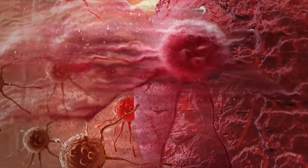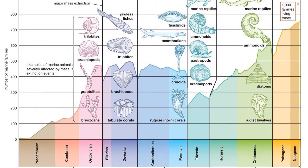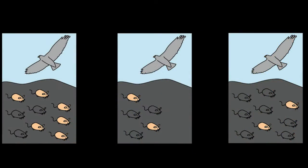A mutation can happen in many species at the same time because of a large natural event, such as an ice age or a meteor crashing to earth. Or one species can change at a time due to a local event, such as a new predator or prey, or an environmental issue such as a storm or volcano.